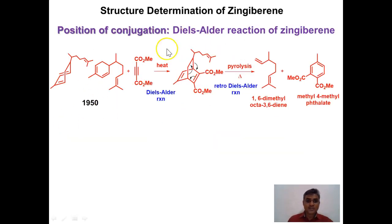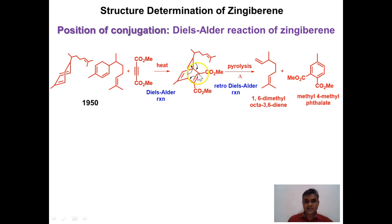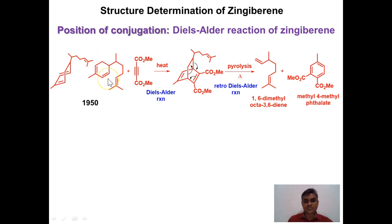Once the zingiberene structure is established, the Diels-Alder reaction provides additional confirmation. Zingiberene can be rewritten in butadiene format, and butadiene reacts with acetylene to give a bicyclic adduct via the Diels-Alder reaction. This Diels-Alder adduct undergoes retro-Diels-Alder reaction under pyrolysis conditions, giving 4-methyl phthalate (a dimethyl phthalate derivative). This reaction again proves that zingiberene contains two conjugated double bonds.